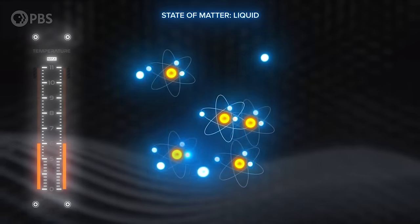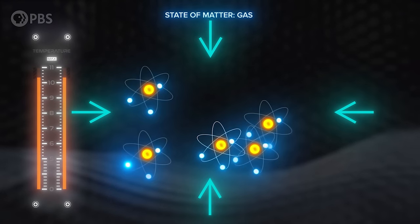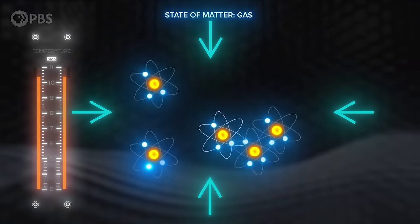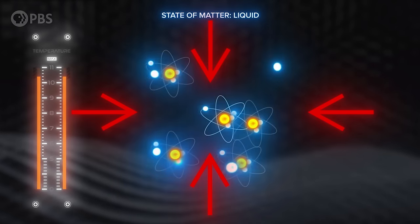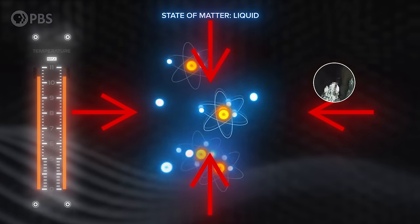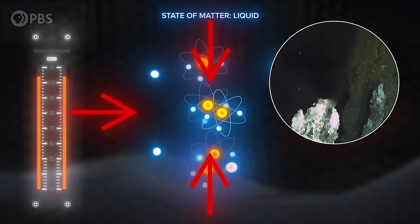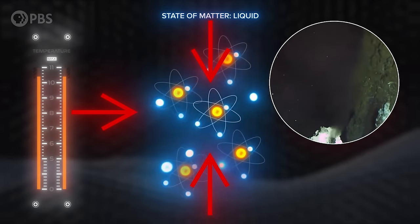The reason solids melt and liquids boil is that rising heat energy allows bonds between atoms and molecules to break. But high pressure helps to keep particles together, so it takes more heat energy to break bonds. That's why water remains a liquid at 400 degrees Celsius near hydrothermal vents on the ocean floor, while it boils at only 68 Celsius on top of Mount Everest.